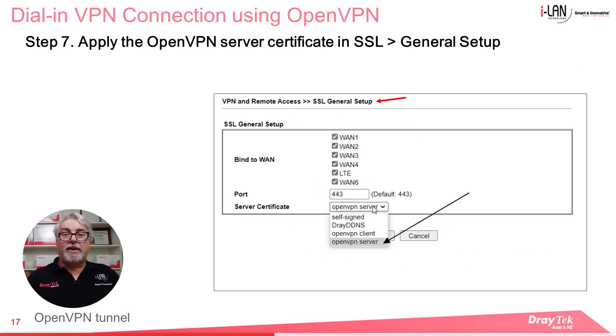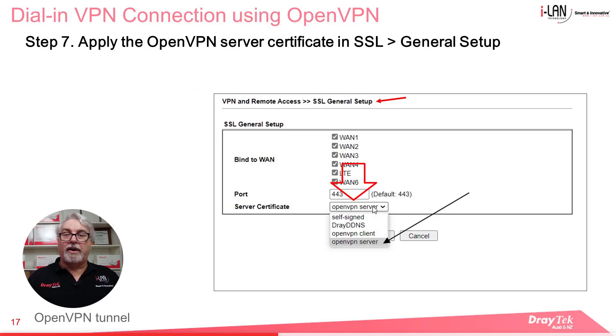In Step 7, go to VPN and Remote Access, SSL General Setup, and select the OpenVPN Server Certificate you generated earlier, then click OK.